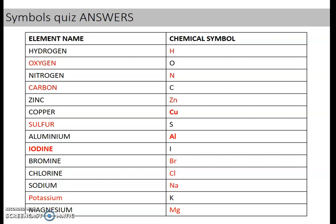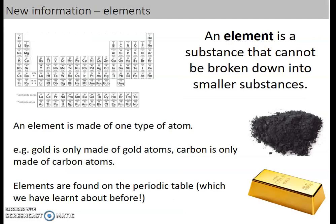Hopefully you managed to get the majority of those by using the periodic table — it's something that you need to be able to do. Just a bit of background information about what an element is. An element is a substance that can't be broken down into smaller substances — that's the smallest thing that can exist. An atom is the smallest thing that can exist, and atoms make up elements. So an element is made up of one type of atom: gold is only made up of gold atoms, carbon is only made up of carbon atoms, and elements are found on the periodic table.